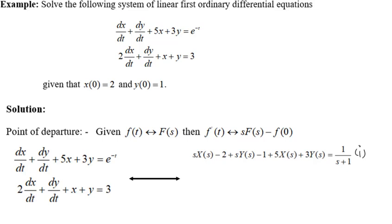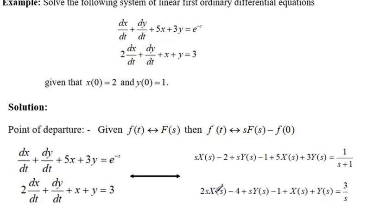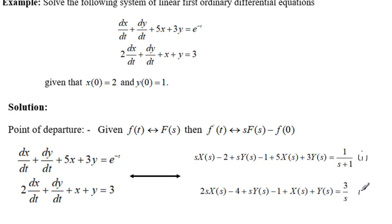Moving forward, we now apply Laplace transform to the second equation. Applying the transform to the derivative and multiplying by 2, we get 2s·X(s) minus 4. For y there is no change, and on the right-hand side a constant gives us 3 over s. Now we have our equation 1 and equation 2.